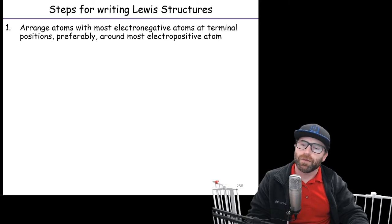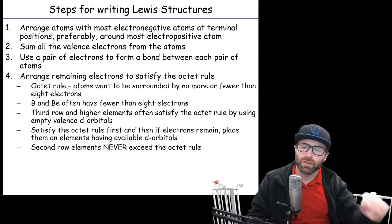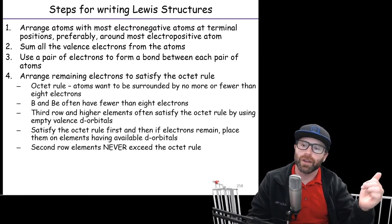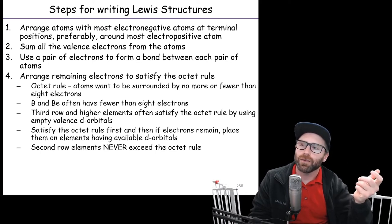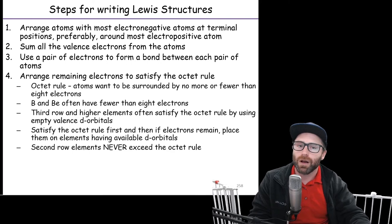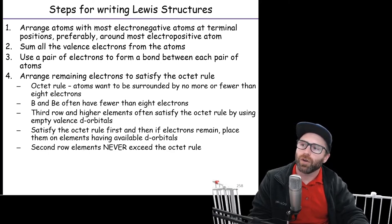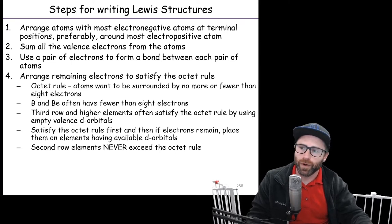We're going to go over the steps for writing a Lewis structure. First, arrange your atoms with the most electronegative atoms at the terminal positions and put your most electropositive atom in the center. Count up all your valence electrons from all the atoms. Use pairs of electrons to form bonds — as simple as possible — between your terminal atoms and your central atoms. Then arrange any remaining electrons to satisfy the octet rule. The octet rule is the formal name for the idea that all atoms want eight electrons in their valency — they want to get a noble gas configuration.